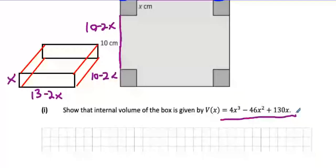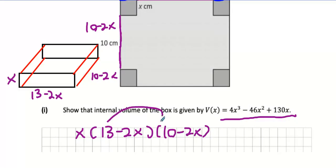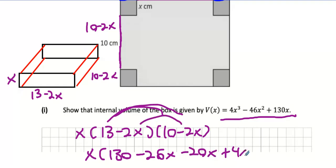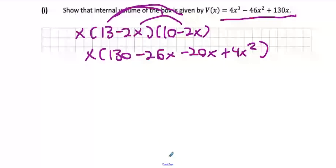Once again, if you can't do question one, you can use that formula to do the rest of the questions, so there's no big deal if you don't get it. What we say is x times 13 minus 2x times 10 minus 2x. Here's what I'm going to do: multiply two brackets. So I'm going to get 130 minus 26x minus 20x, and then after that plus 4x squared. Two minuses make a plus.